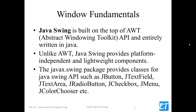Java Swing is built on top of AWT and is entirely written in Java. Unlike AWT, Java Swing provides platform-independent and lightweight components. The Abstract Window Toolkit API directly uses operating system resources, so it is platform-dependent and heavyweight. But Java Swing is platform-independent and provides lightweight components.